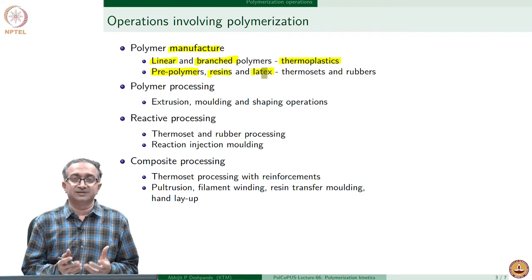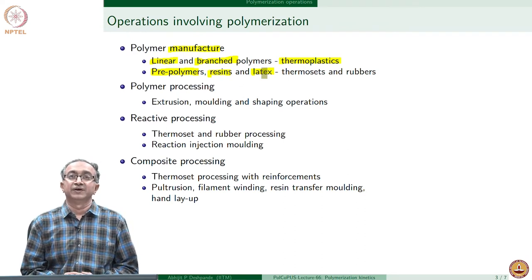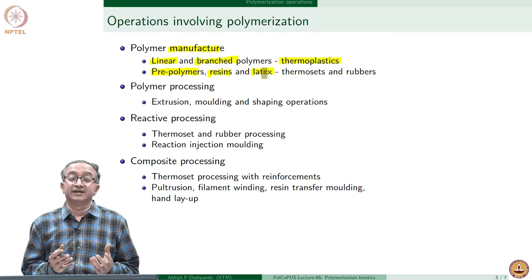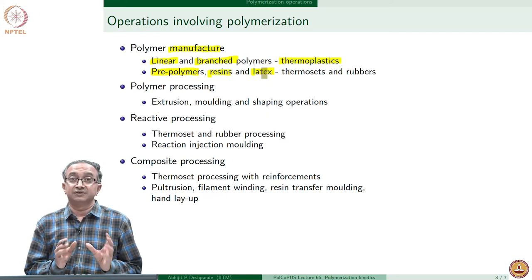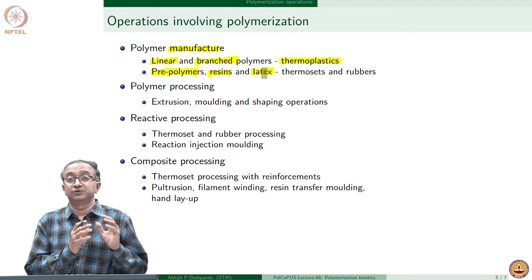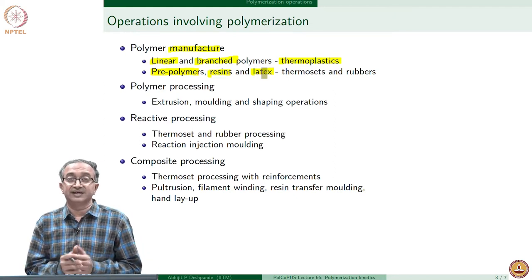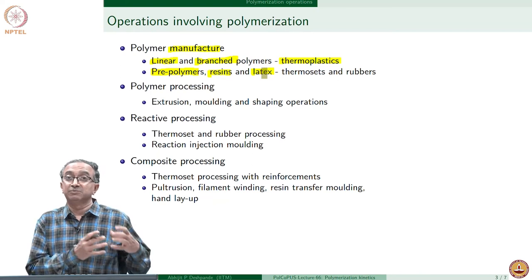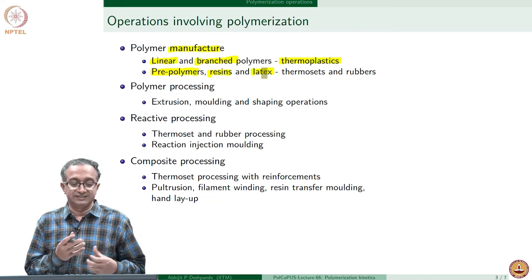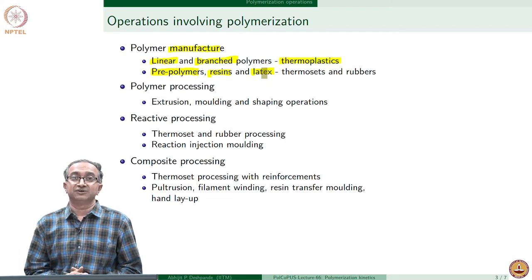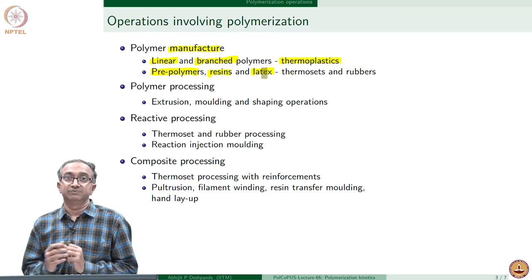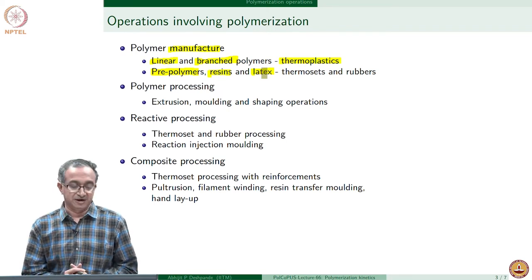In case of thermosets and rubbers, because cross-linking reactions will determine the shape, shaping and cross-linking have to be done together. So in that case we prepare only a pre-polymer or what is called a resin. We use resin as a term because viscosity is high but not very high, so these materials can still flow and are amenable to shaping. This is the two broad classes of polymerization processes: in one case we do the polymerization and then do only processing; in the other case we do some amount of polymerization to make the resin or pre-polymer or latex, and then finish the polymerization and cross-linking processes during fabrication of the part.